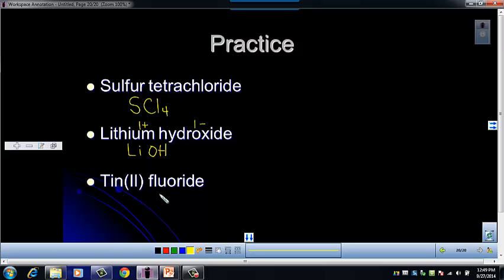Now we have tin(II) fluoride. Tin is a metal. You can see the Roman numerals. That tells you it's ionic. And then we have fluorine, which is a nonmetal. So tin has a 2 plus charge. Fluorine has a 1 minus. And so we know that our least common multiple of 2 and 1 is 2. So we need one tin. We need two fluorines to make an overall negative 2 charge. So it's going to be SnF2.